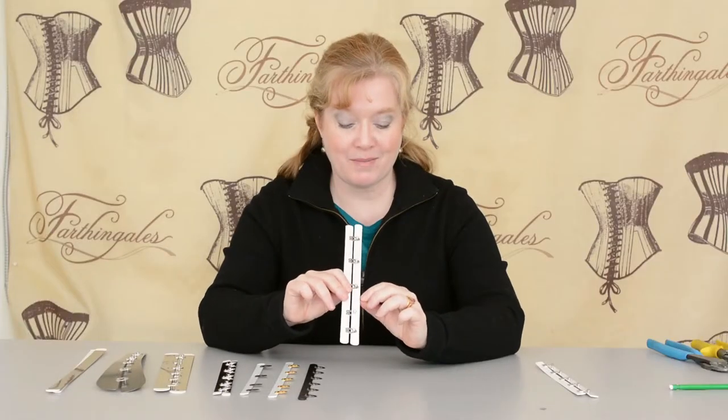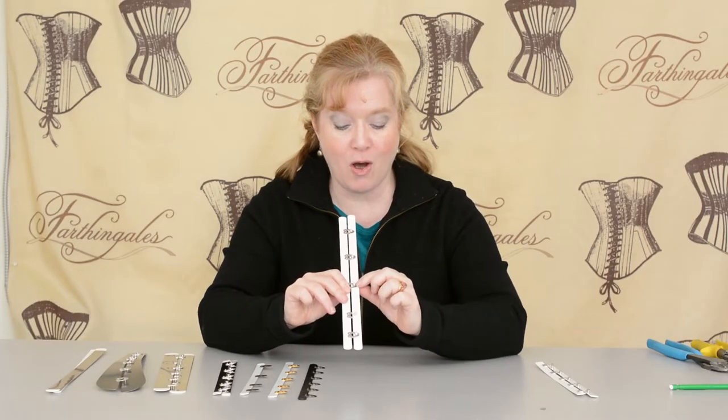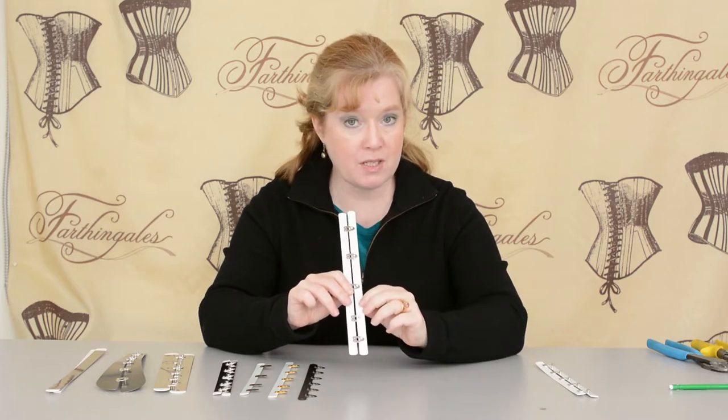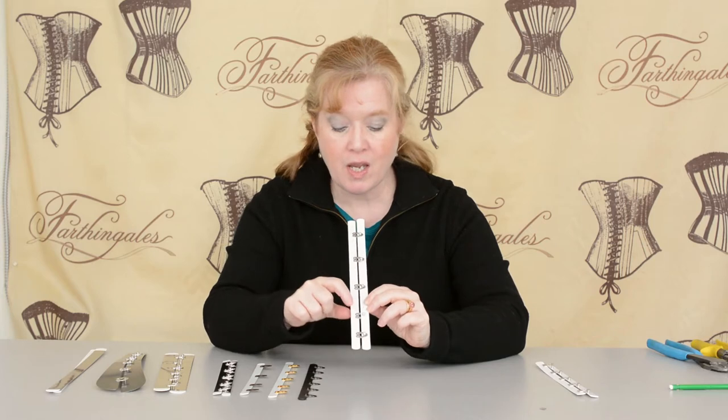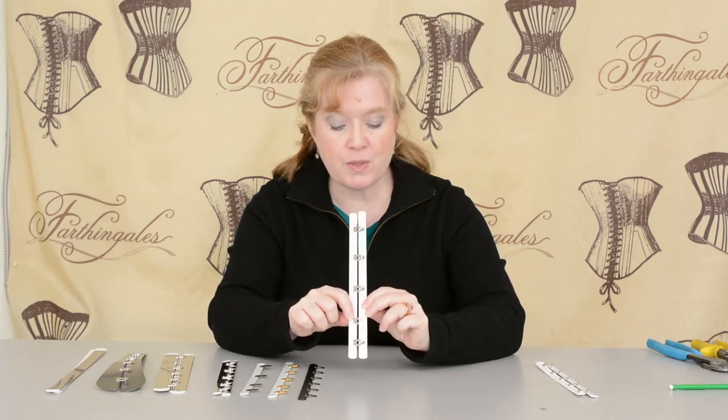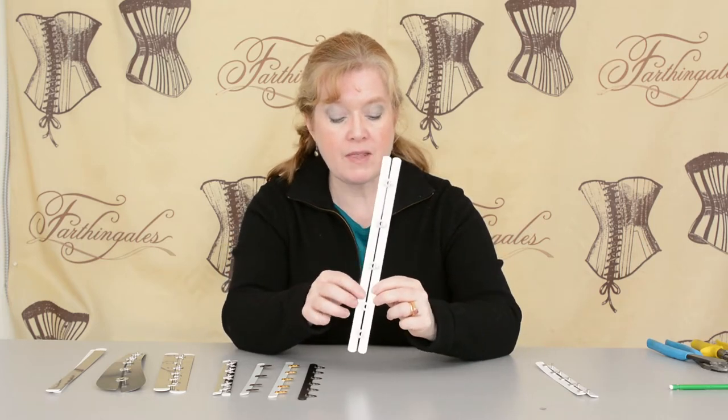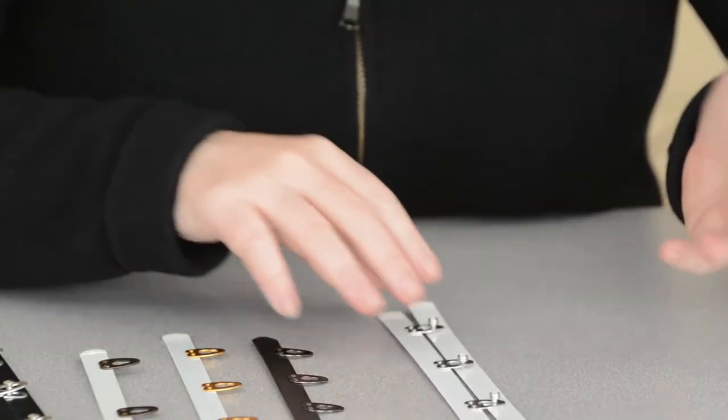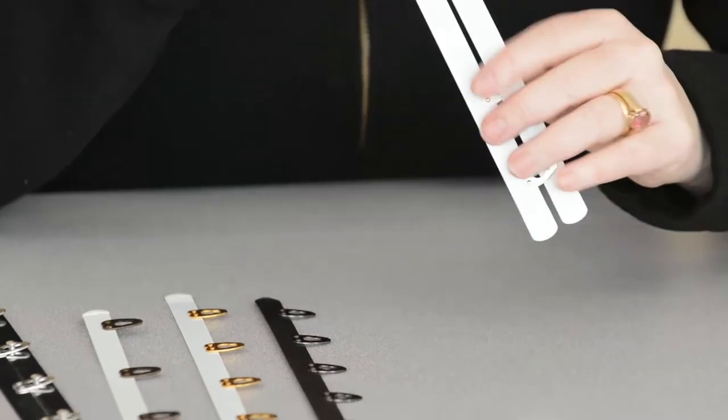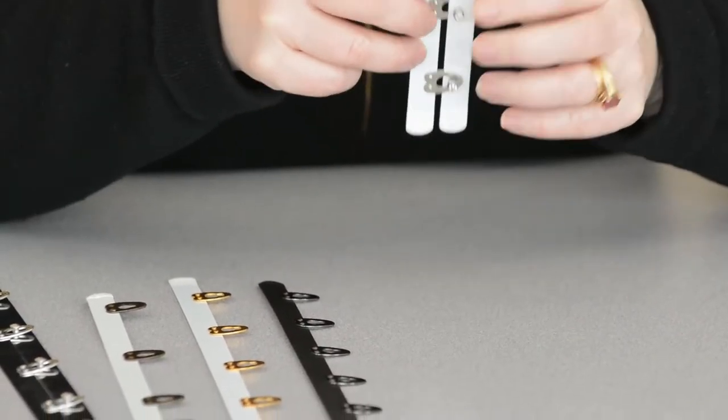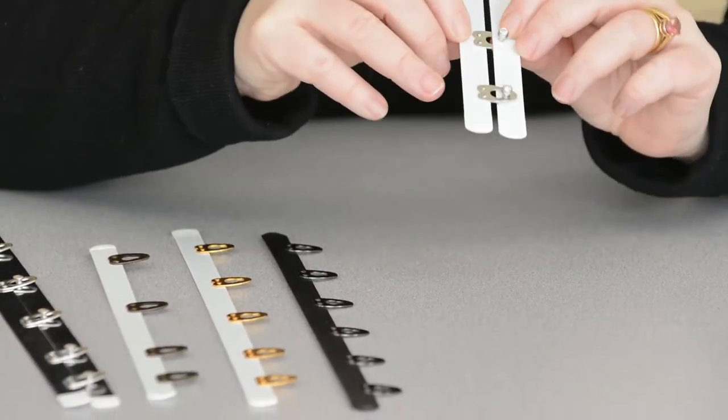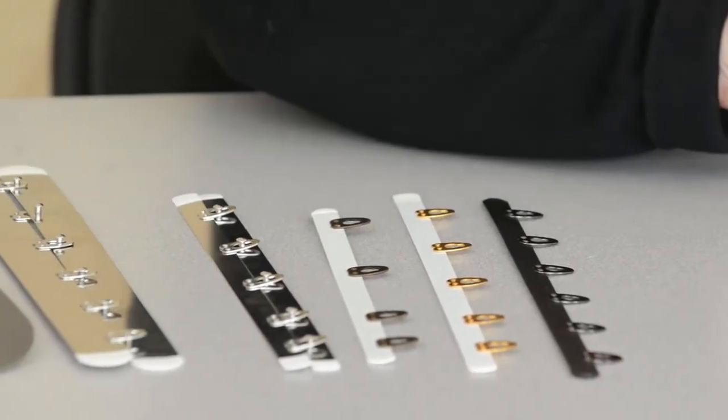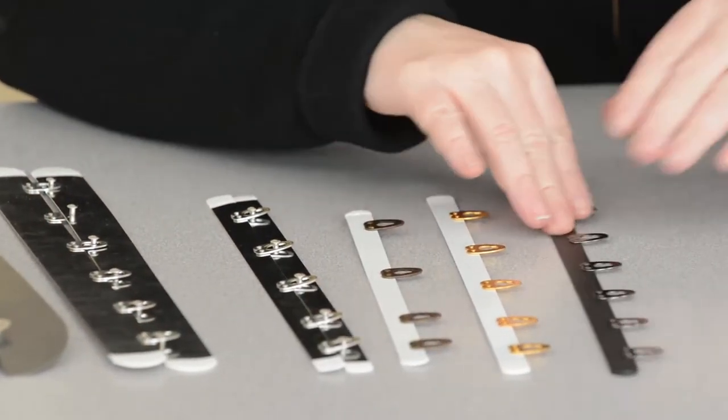This is a diamond busk with little diamonds in the knobs, great for a bridal corset or evening wear corset. You can see one of the loops is behind the busk - that just keeps the busk from coming apart when it's in a drawer or on a table. When you're wearing the busk in a corset, it will be over top of the knob.